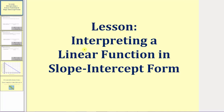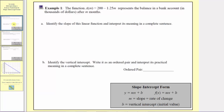Welcome to a lesson on interpreting a linear function in slope-intercept form. For review, y equals mx plus b, or in function notation, f of x equals mx plus b is slope-intercept form. m, which is the coefficient of the input variable, equals the slope, which is the rate of change. And b, the constant term, equals the vertical intercept, which we also call the initial value or starting amount.